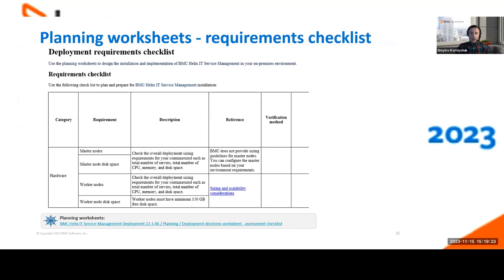We also have a checklist document which helps you understand the system requirements — hardware, software, and network dependencies. This incorporates real-life use cases with sizing and major options. You can check through it and ensure it aligns with your setup.